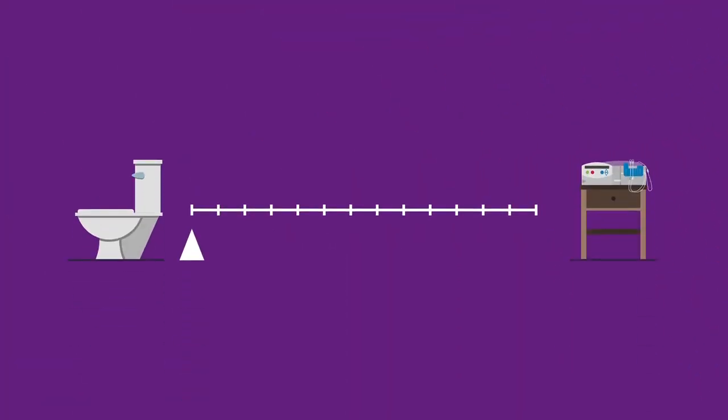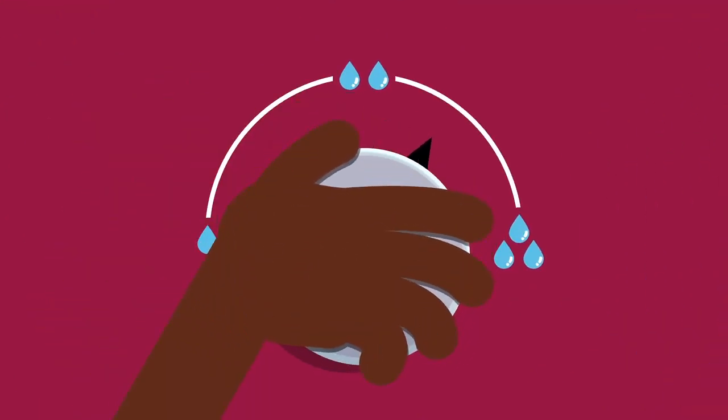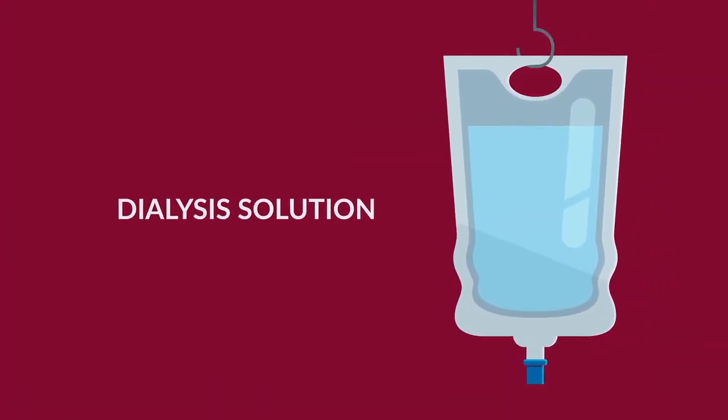And as you urinate less and less over time, dialysis needs to remove more waste and fluid. You can actually control how much fluid is removed from the body by adjusting your PD treatments. You do this by choosing the right strength of dialysis solution.